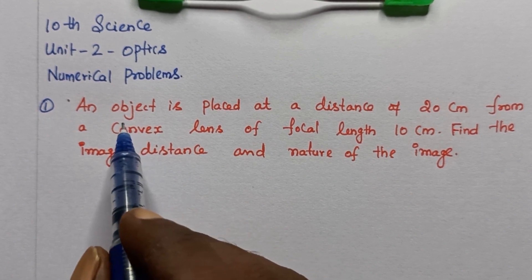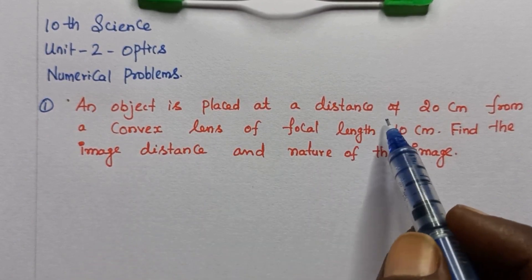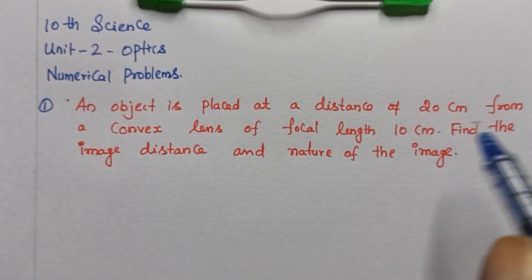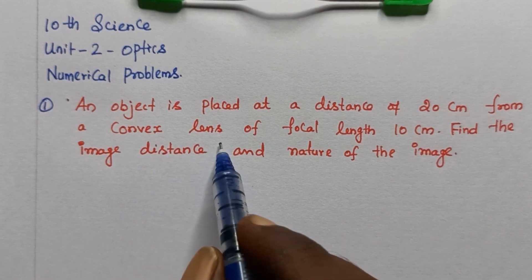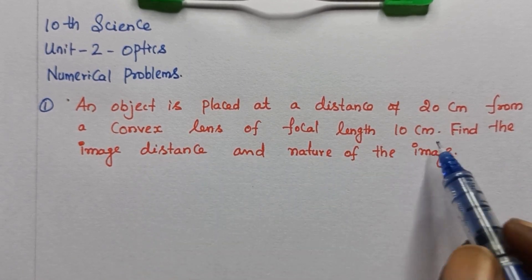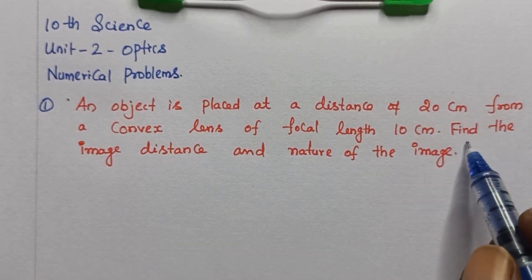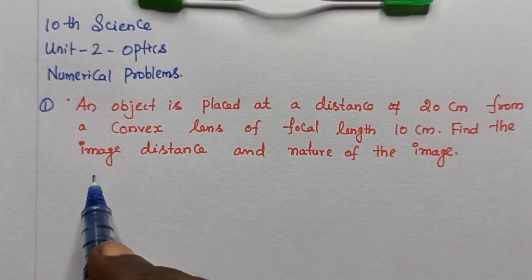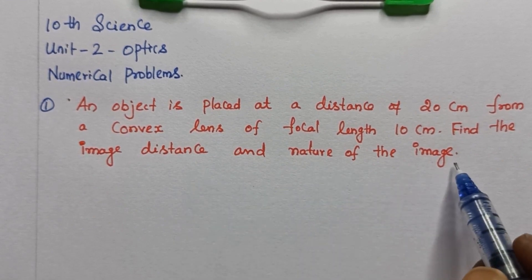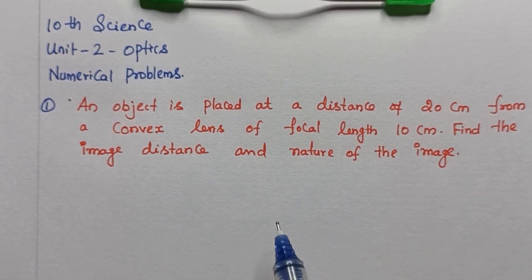An object is placed at a distance of 20 centimeters from a convex lens of focal length 10 centimeters. Find the image distance and nature of the image.